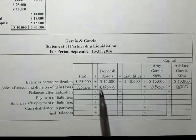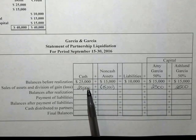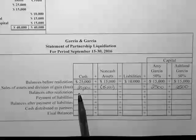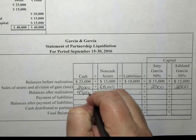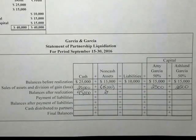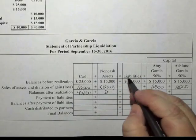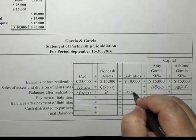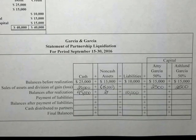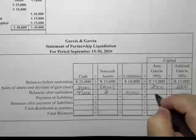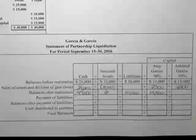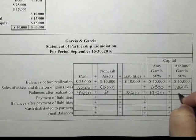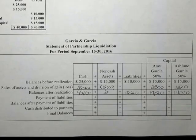This is the $5,000 gain on the sale of assets. The balances after realization leave us with $45,000 in cash, zero non-cash assets, $10,000 in liabilities, and Amy Garcia has $17,500 in her capital account and Ashland Garcia has $17,500 in her capital account.